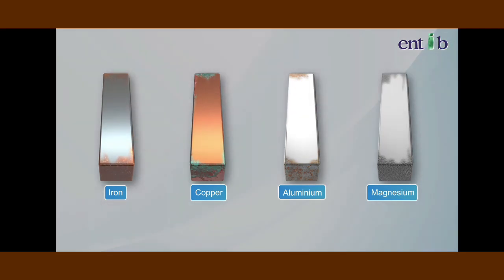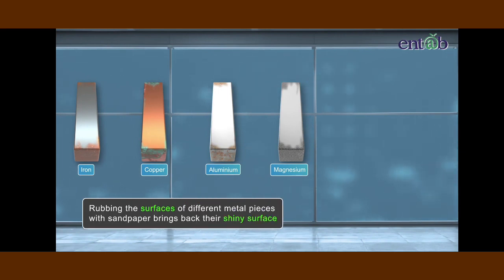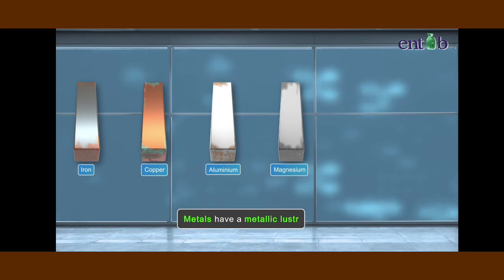Now observe their surfaces once again. Is there any difference? We can clearly note that after rubbing the surfaces of different metal pieces with sandpaper, each one of them has a shiny surface. This shine on the surface of the metal is called metallic luster.